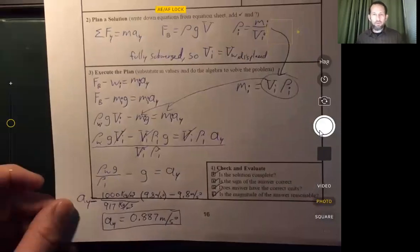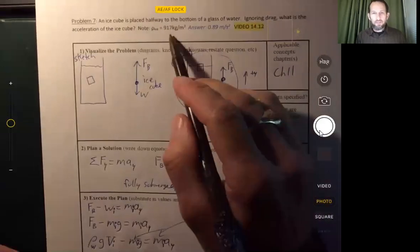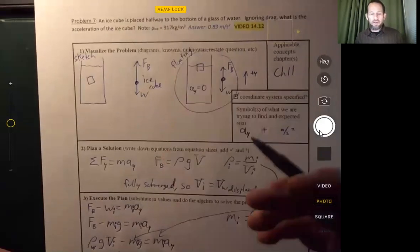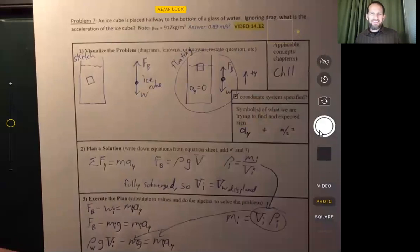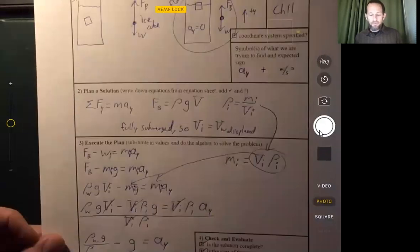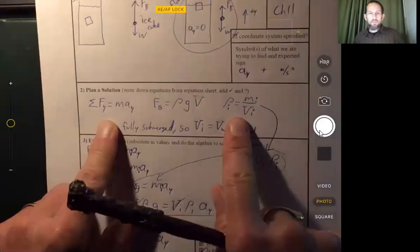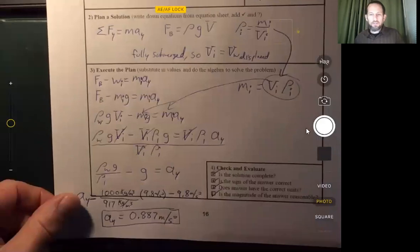All right, we made it through that. And remember, all that we were given was the density of ice. We knew the density of water already. We knew the value of g, the acceleration due to gravity. And with that limited amount of information and the same relationships that we've been using throughout this packet, we were able to solve for the acceleration of that ice cube.